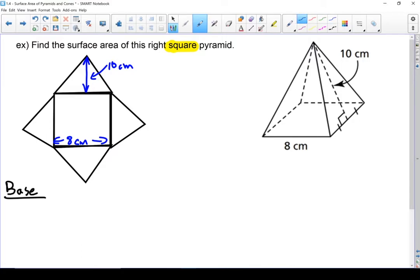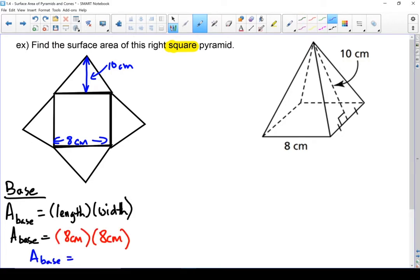The base is a square, so the area is length times width. In this case, the area of my base is 8 centimeters times 8 centimeters. The area of my base equals 64 square centimeters. Let's highlight that because it's important and I'm going to need to come back for it.